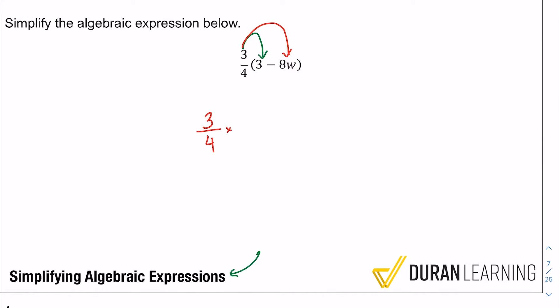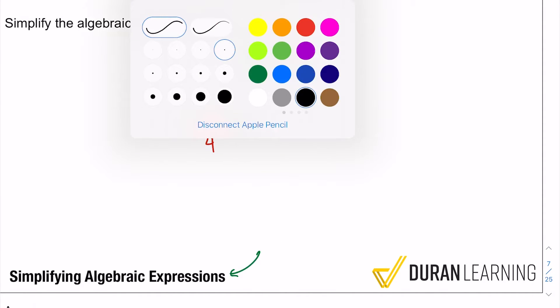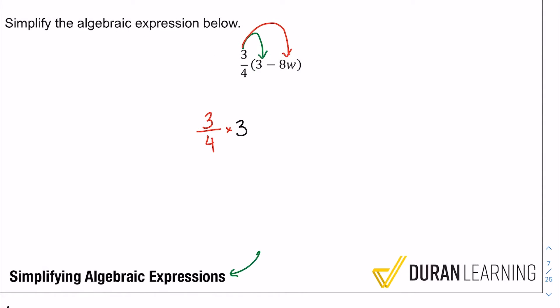So with that said, we're gonna have three quarters multiplied by three, and then we're gonna subtract, and then we're gonna have three quarters multiplied by eight w. All right, so we got three quarters times three minus three quarters times eight w.